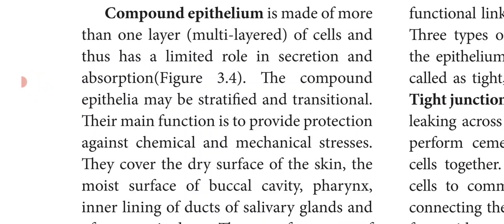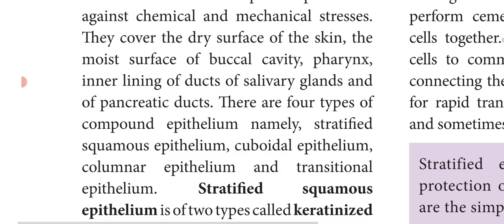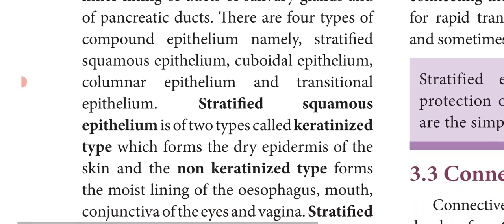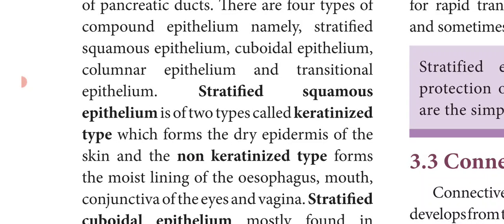There are four types of compound epithelium: stratified squamous epithelium, cuboidal epithelium, columnar epithelium and transitional epithelium. Stratified squamous epithelium is of two types: keratinized and non-keratinized. The keratinized type forms the dry epidermis of the skin — keratin is a protein.